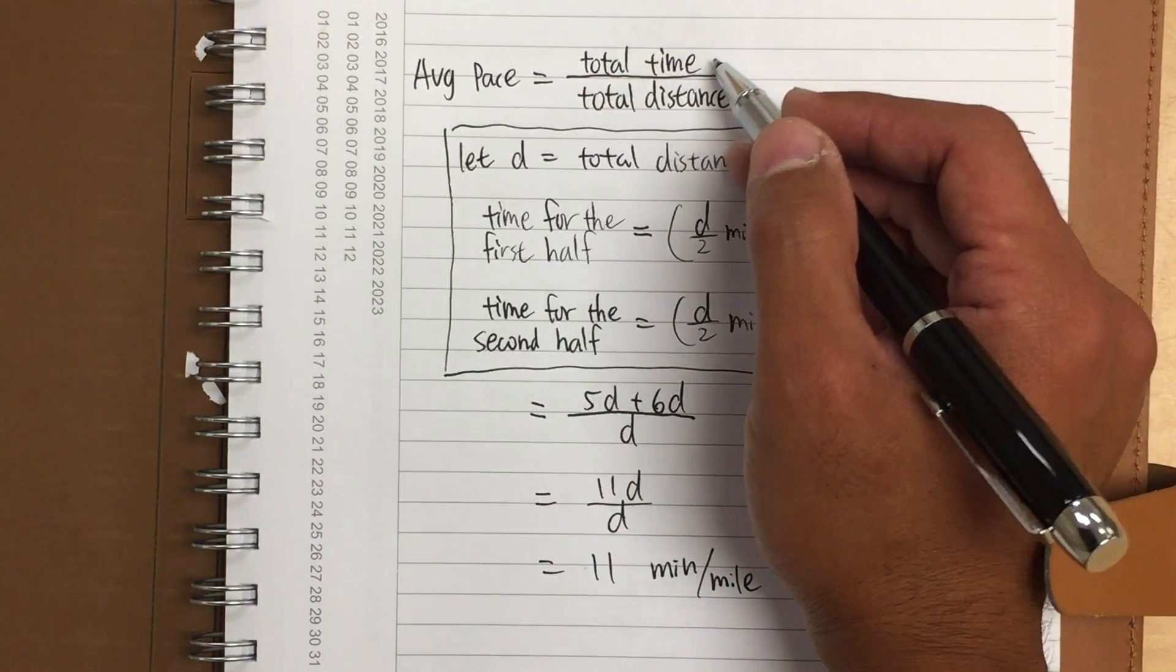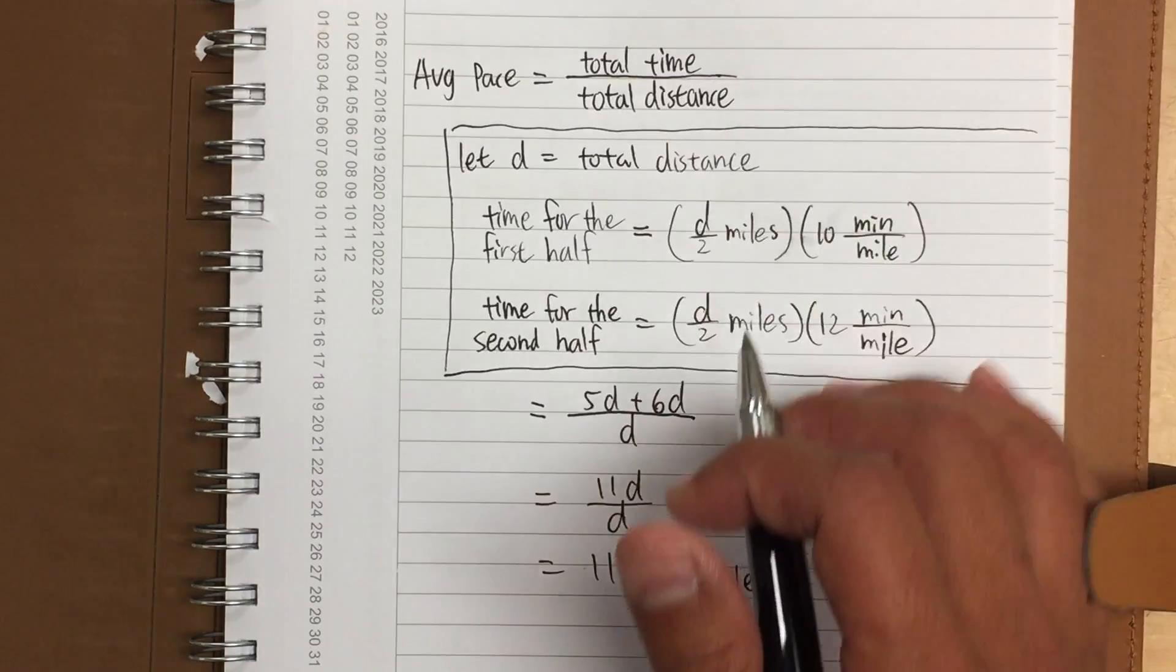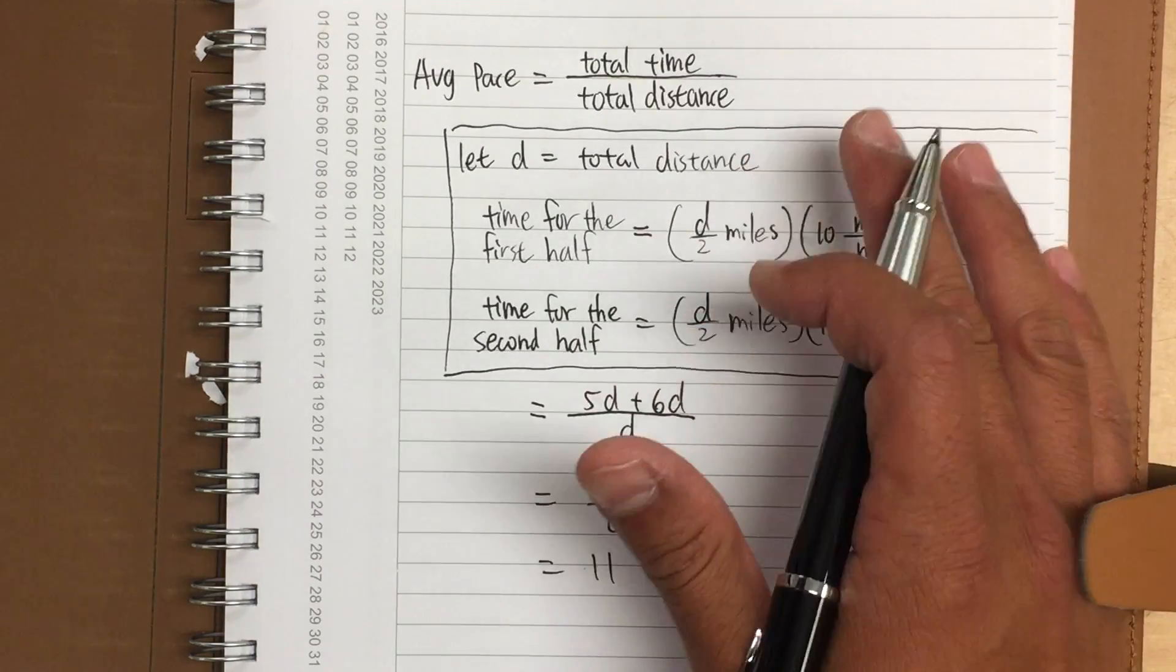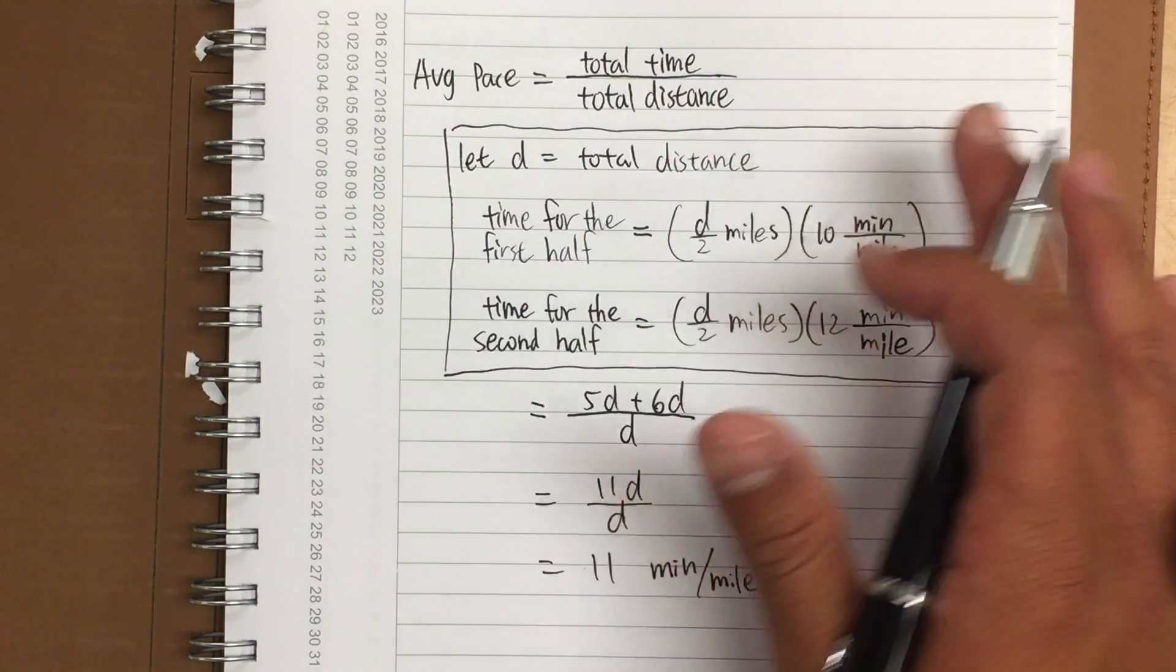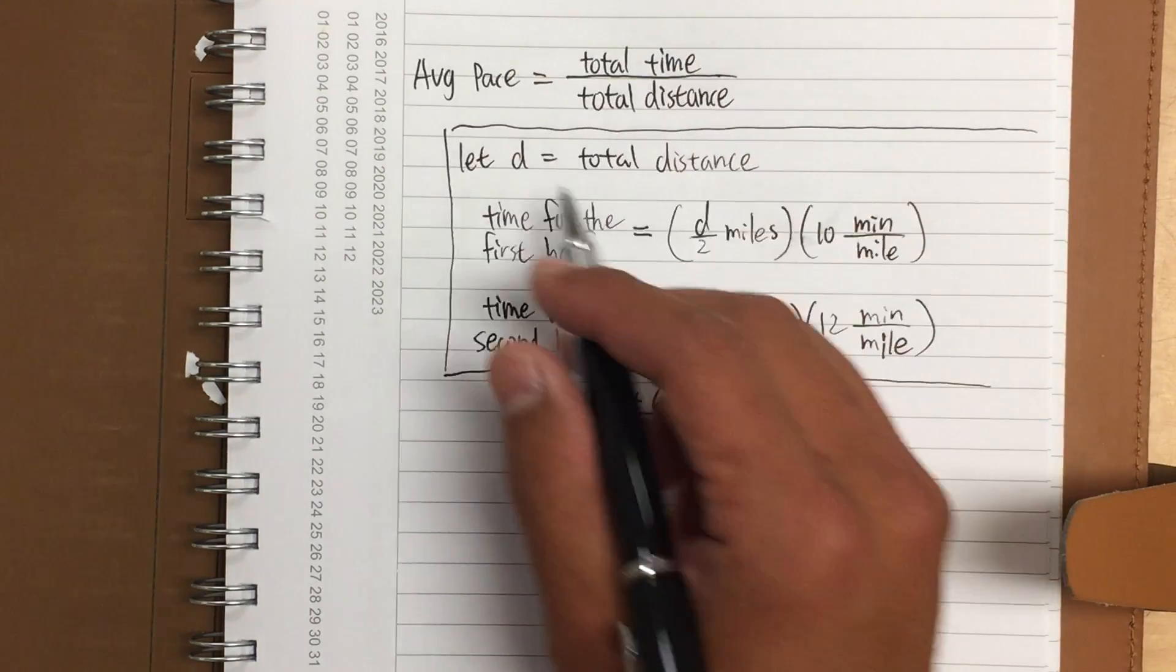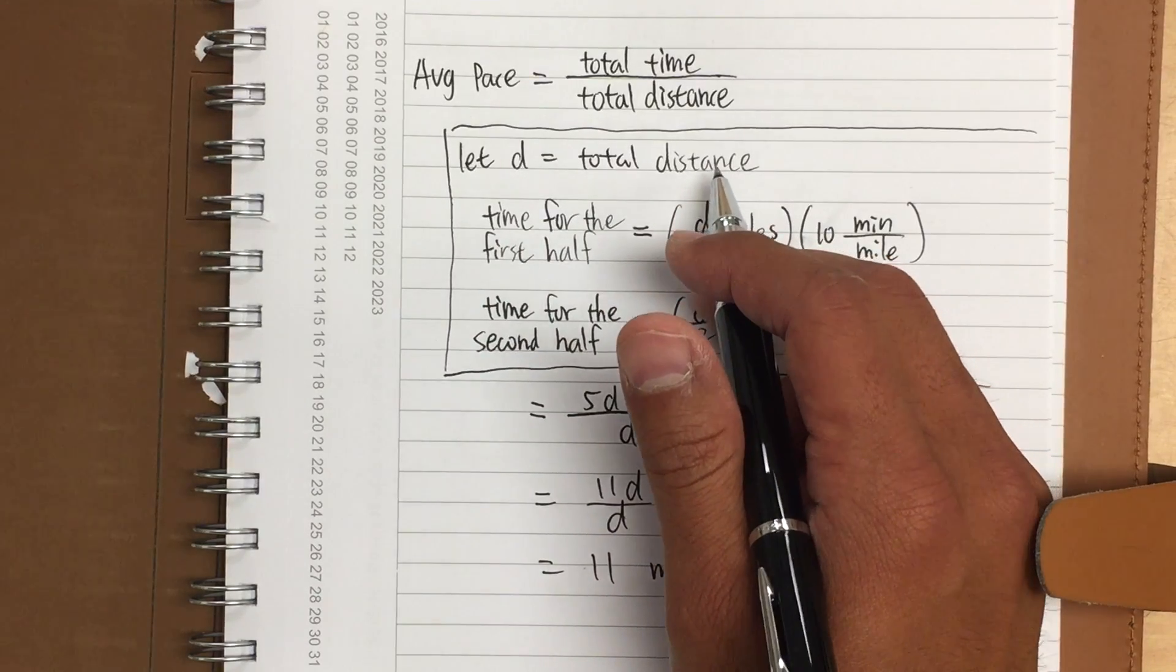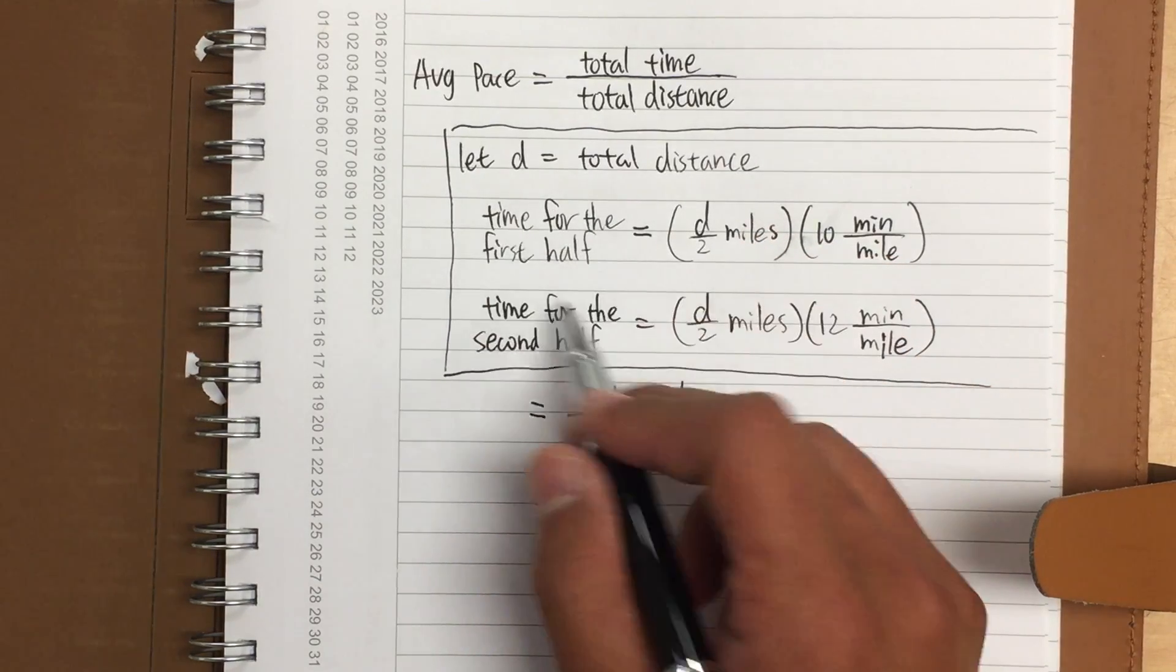Average pace is defined to be total time over total distance. And in my question, the time will be measured in minutes, and the distance will be measured in miles. And maybe you will wonder how long the actual marathon is, the full thing. But you don't need to know in my context. And to start with the equation, we can just say that d equals the total distance, but we still have to figure out the time I spent for the first and the second half.